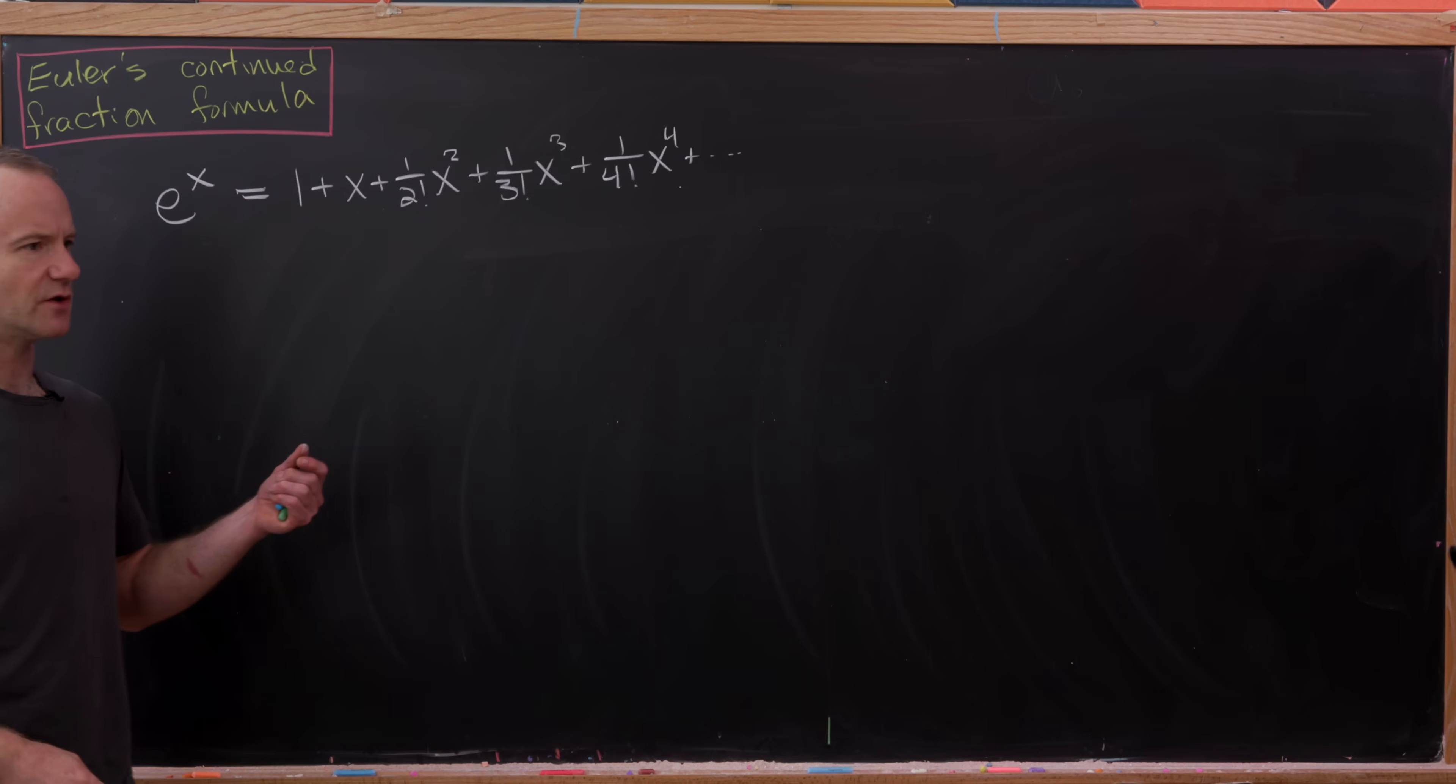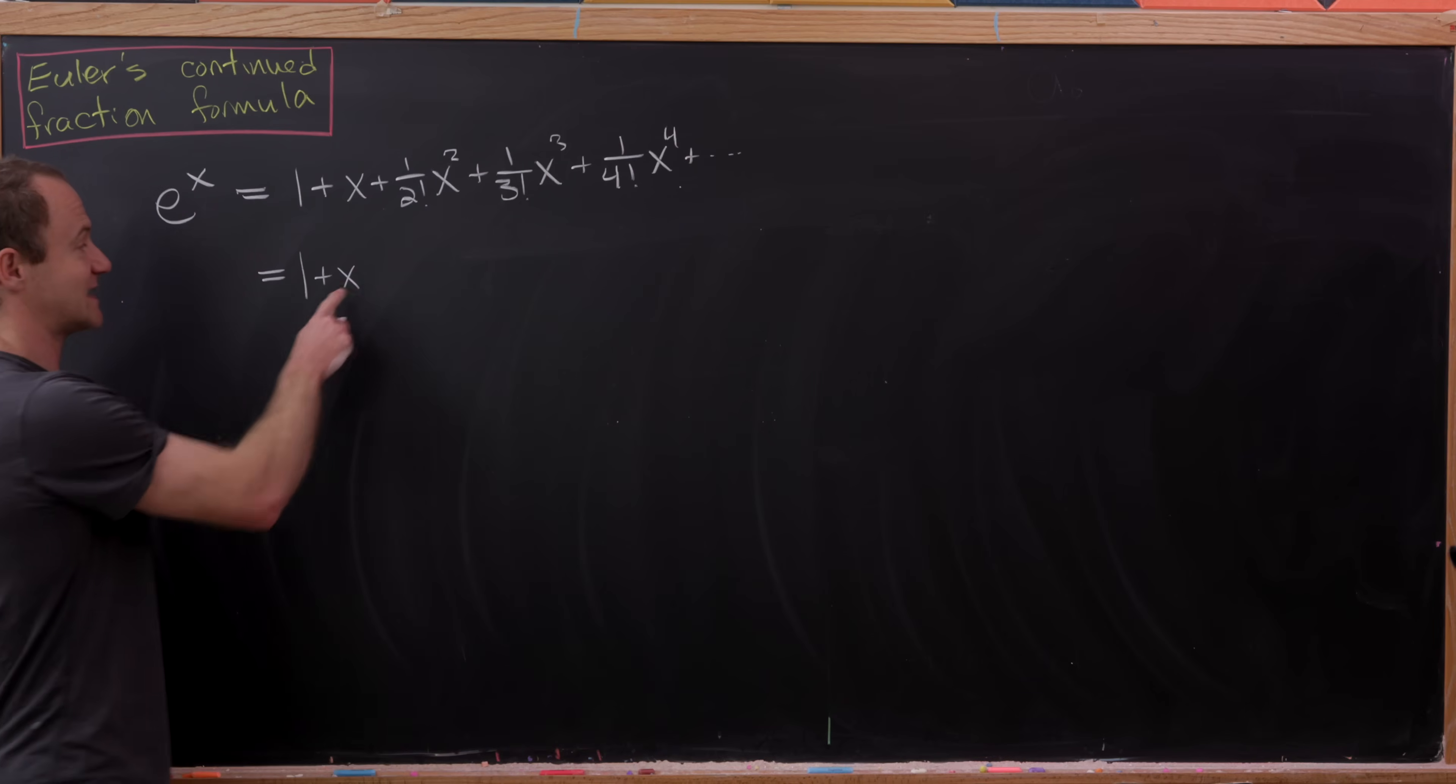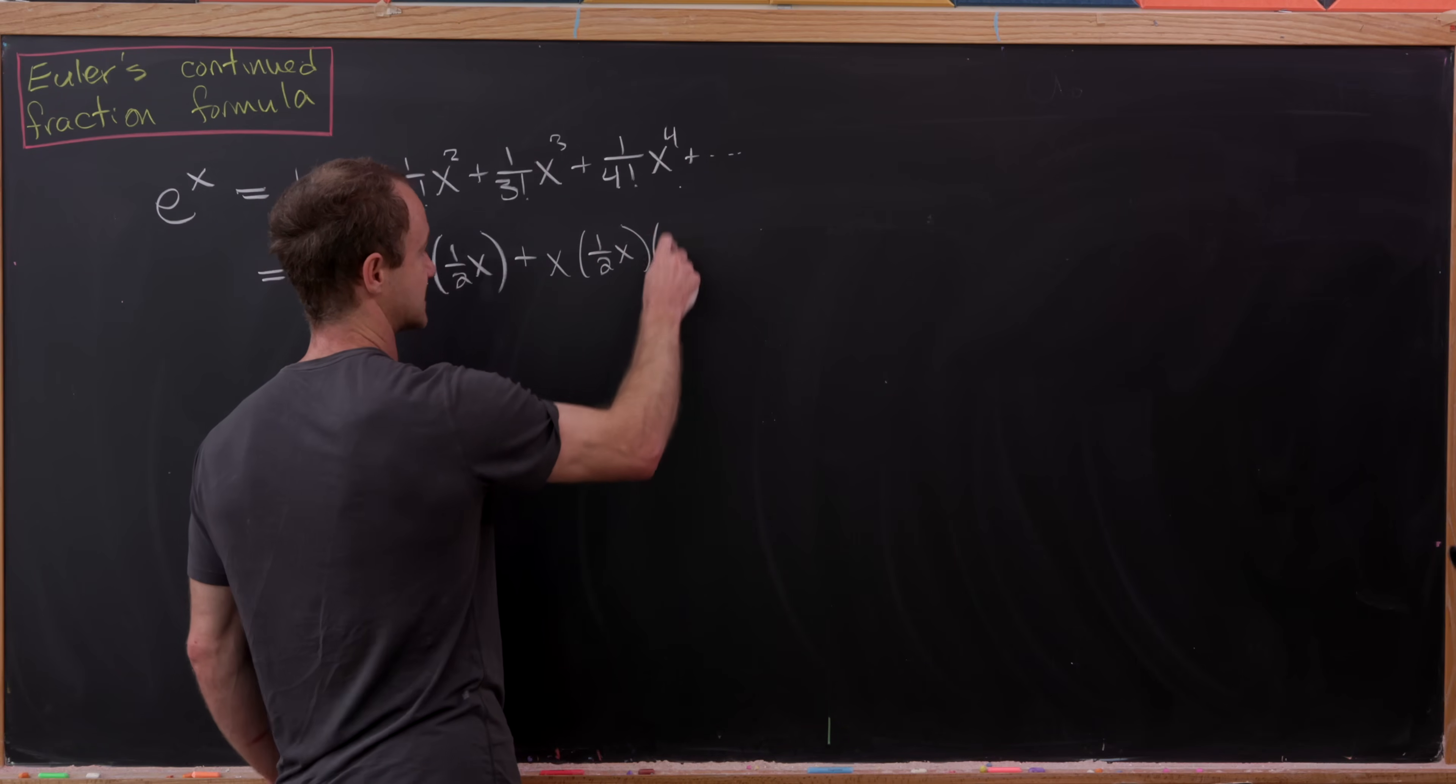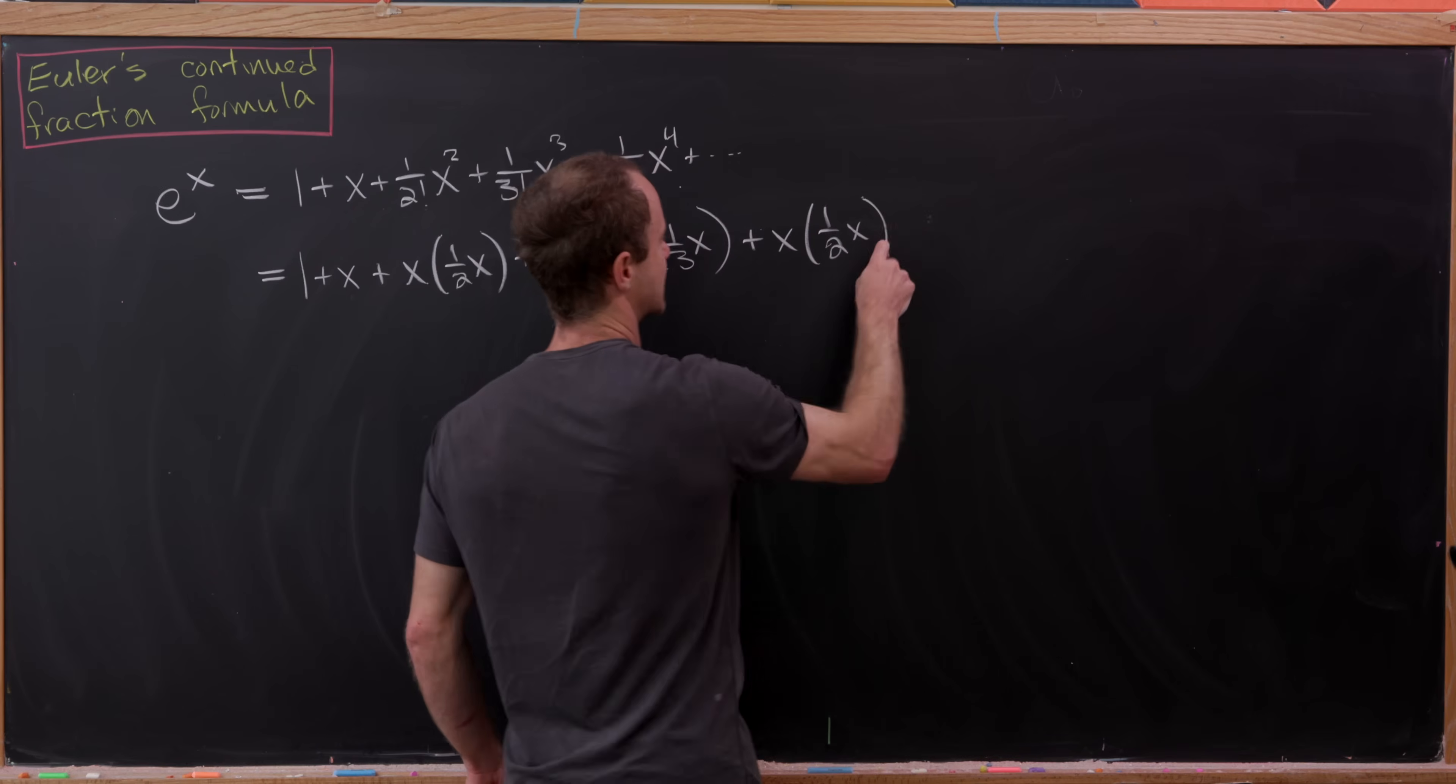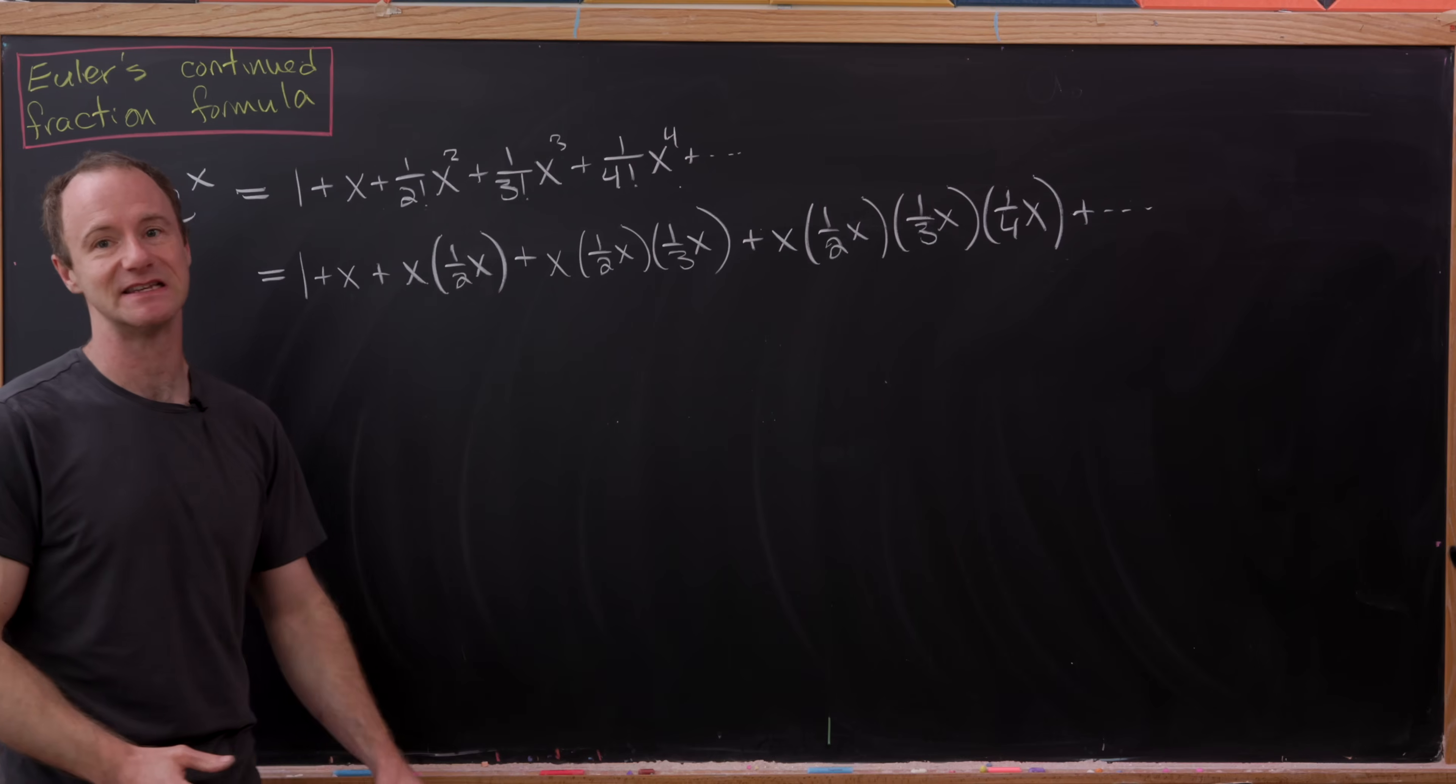But we want to write this in a way so that each subsequent term is a product of a new thing as well as the previous terms. But that's not too hard to do with factorials. Notice that we could write this as 1 plus x and really view this x as 1 times x and then plus x times 1 half x times 1 half x times 1 third x. So see, the next term is the previous term multiplied by something obvious. And then here we have plus x times 1 half x times 1 third x times 1 quarter x, and then so on and so forth. And of course this converges so we can take the limit of both sides of Euler's formula to produce that infinitely deep continued fraction.